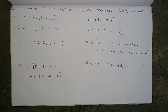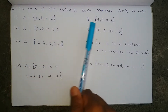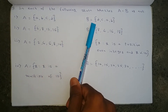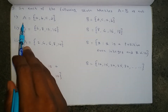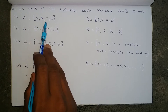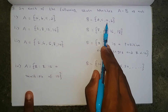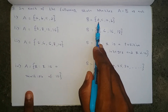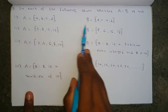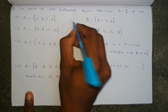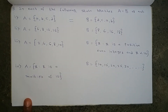The next part says: state whether A equals B or not. Set A and set B are given; we just need to check whether they are equal. Set A has A, B, C, D — four elements — and set B also has A, B, C, D. So set A and set B are having the same elements, therefore set A equals set B.